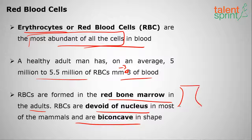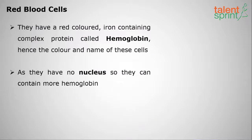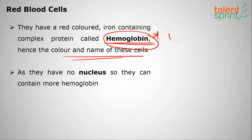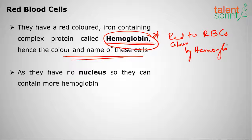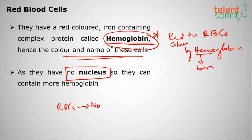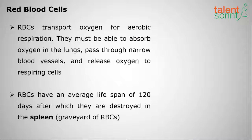RBCs are devoid of nucleus in most mammals and are biconcave in shape. They have a red-colored, iron-containing complex protein called hemoglobin — 'heme' means iron. The red color is given to RBCs by hemoglobin. As RBCs have no nucleus, they can produce and contain more hemoglobin.